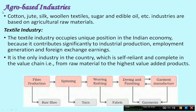Let us now discuss in detail about agro-based industries. In agro-based industries we mainly consider cotton, jute, silk, and woolen textiles, sugar and edible oil — these industries are based on agricultural raw material.